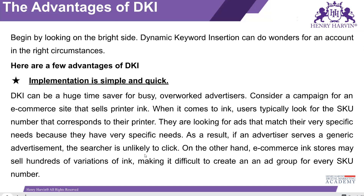So when someone comes to Google and searches 'Indian cake cups,' that keyword triggers the ad. Since we use the DKI function on the headline, they will see 'Indian cupcakes' in the headline. When someone searches for 'eggless cupcakes,' that causes the ad to show on screen, and 'eggless cupcakes' will appear in the headline.